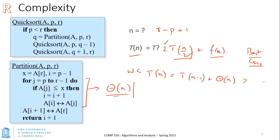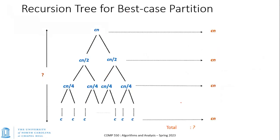Some of you suggested that the worst case could be when the pivot is right at one end, so you're simply reducing the complexity by one and the partitioning time is still pretty much the same. That was an intuitive response — let's take a more detailed look at this.